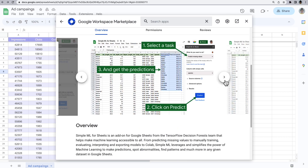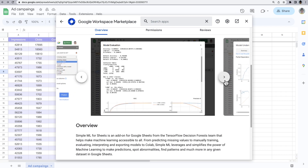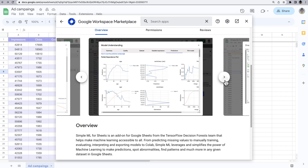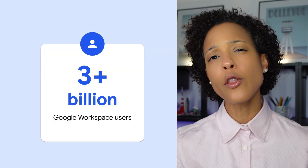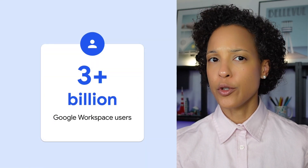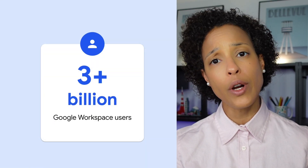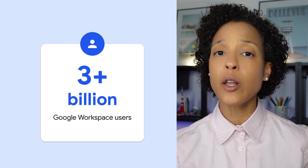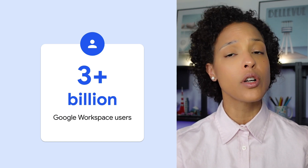Developers can build apps, such as Google Workspace add-ons and chat apps, that add functionality to Google Workspace services, such as Google Drive, Gmail, or Chat. With more than 3 billion users, the Google Workspace Marketplace is a great way for developers to reach a large audience of potential customers.